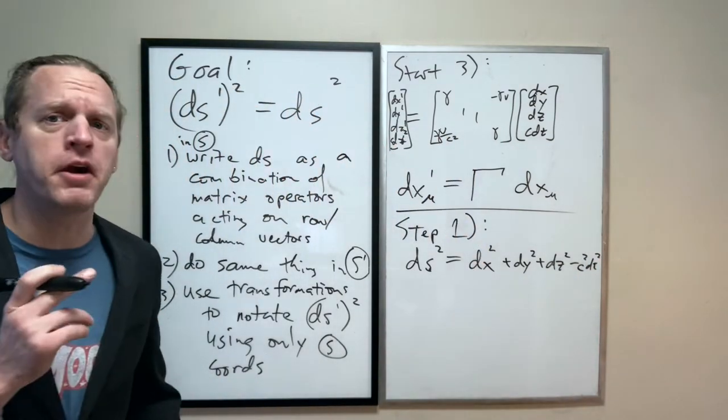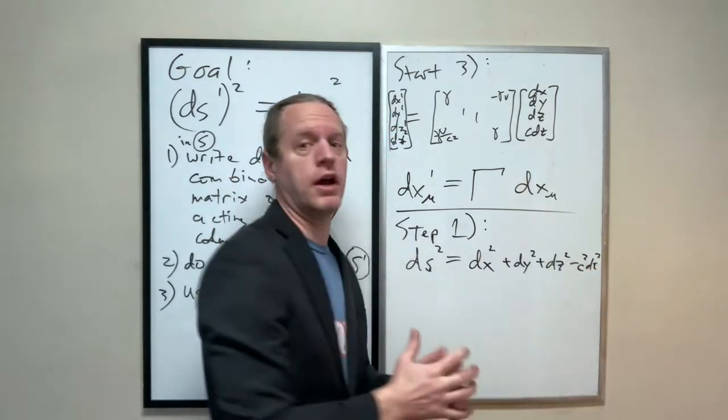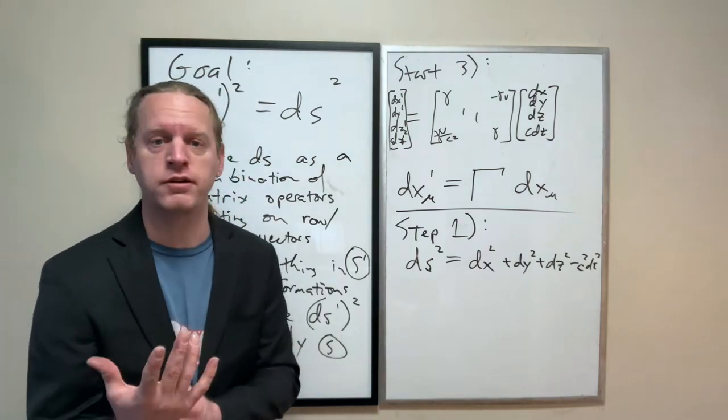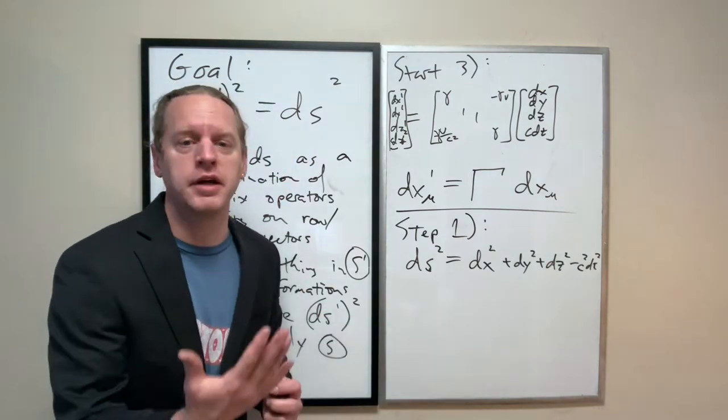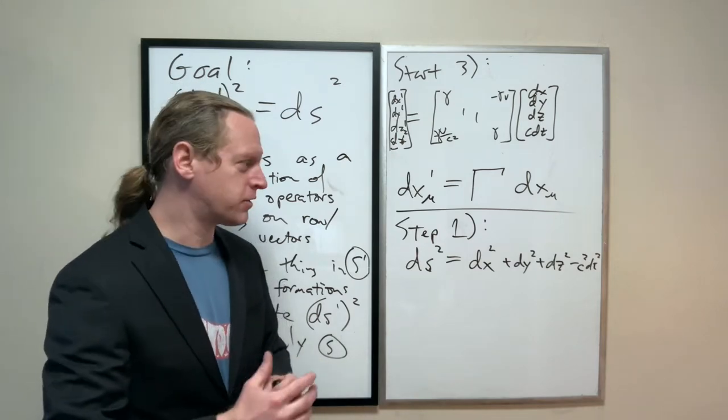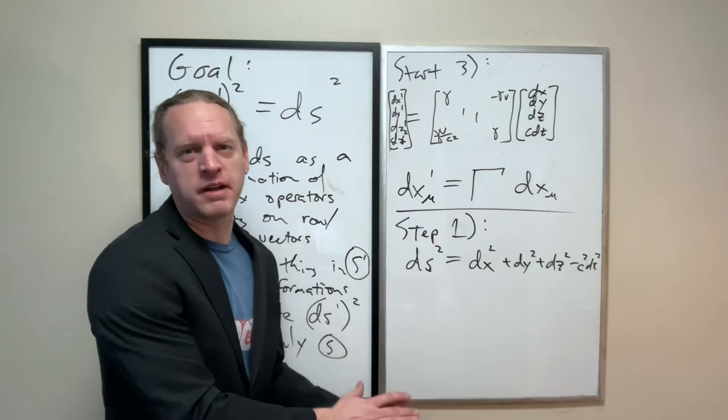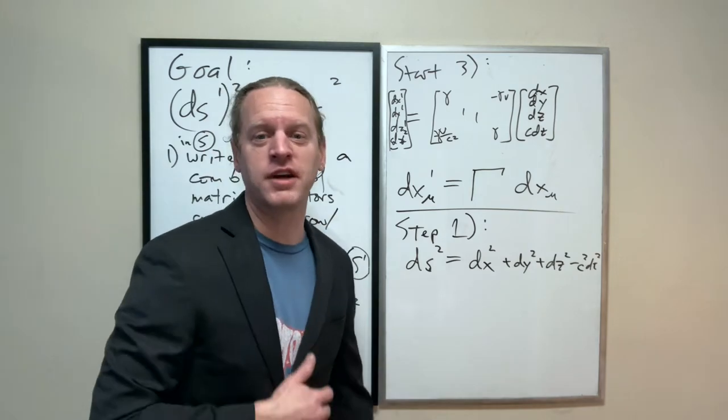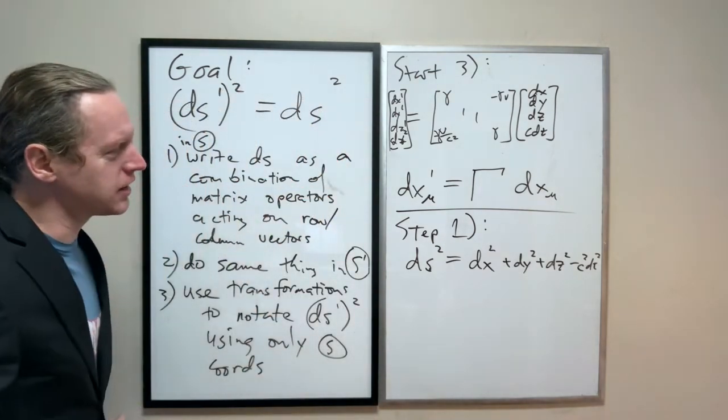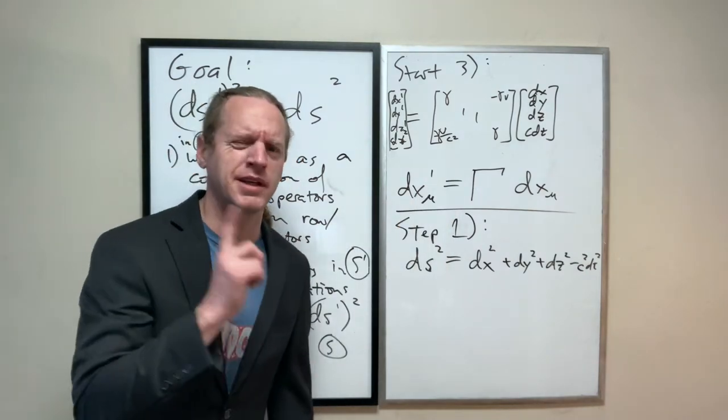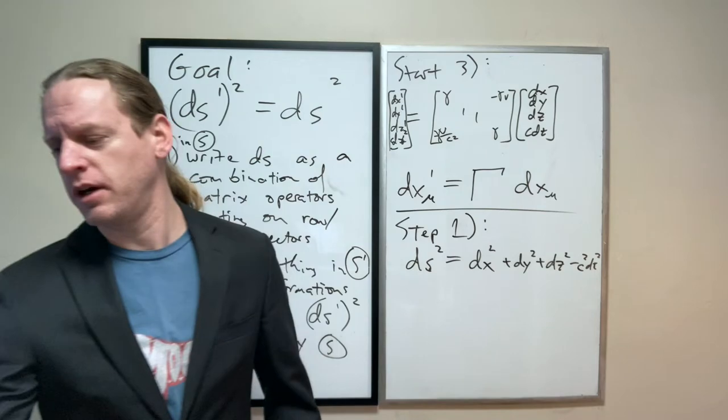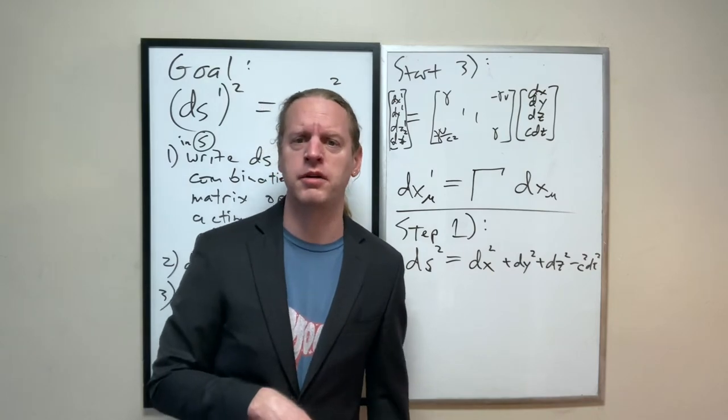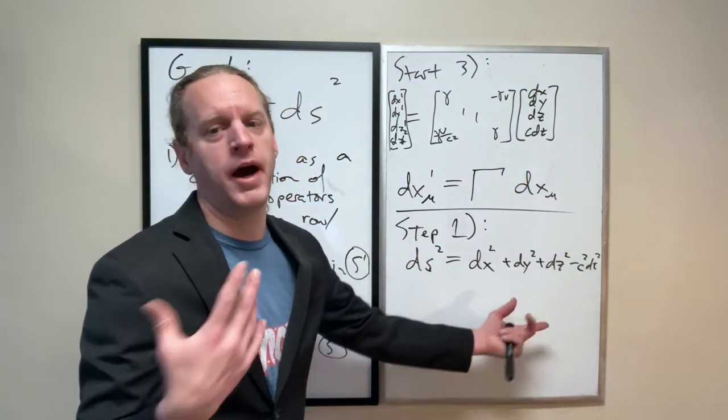We know that ds squared was originally dx squared plus dy squared plus dz squared minus c squared dt squared. Now, one thing, it's very often conventional to treat the time component as positive and to treat the space component as negative. Literally, half the textbooks in the world use one system, half the textbooks in the world use the other. There is a divide between the relativity textbooks for cosmologists and the relativity textbooks that quantum physicists or quantum field theorists use. This is the system we're going to stick with.